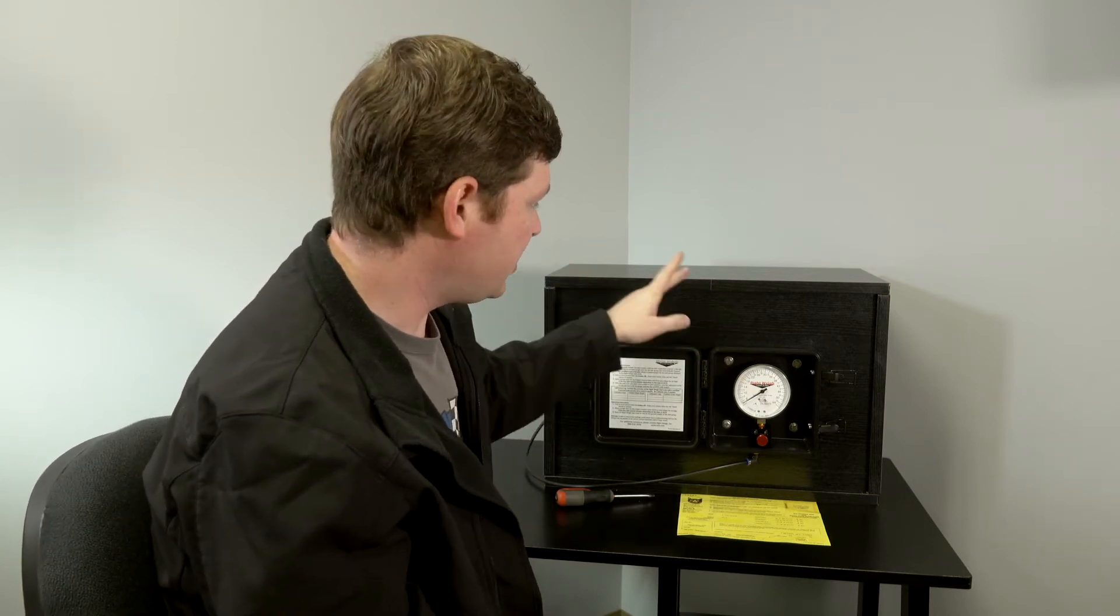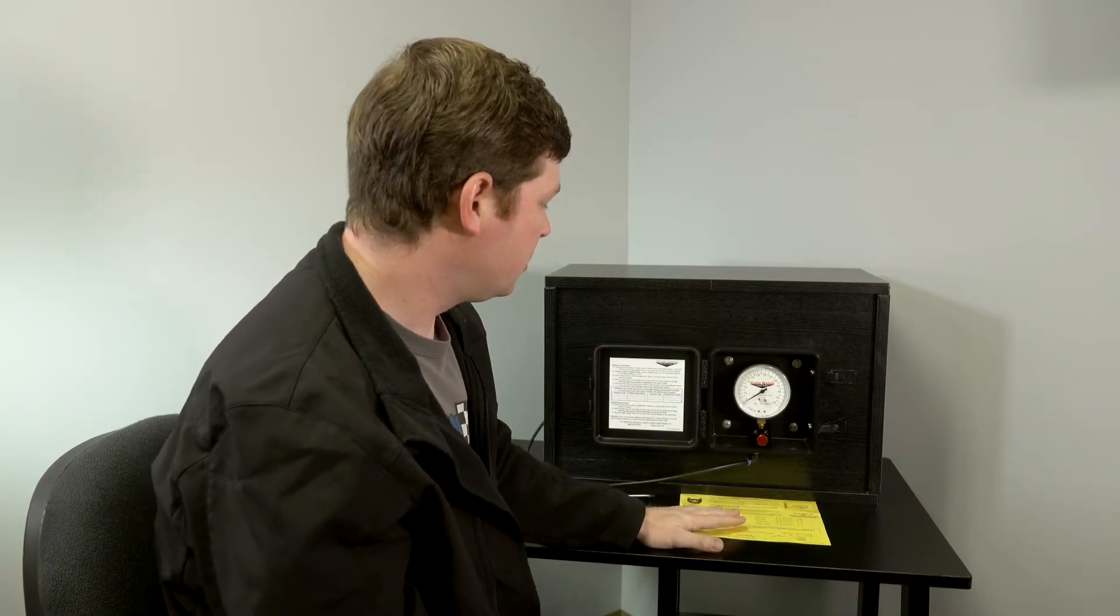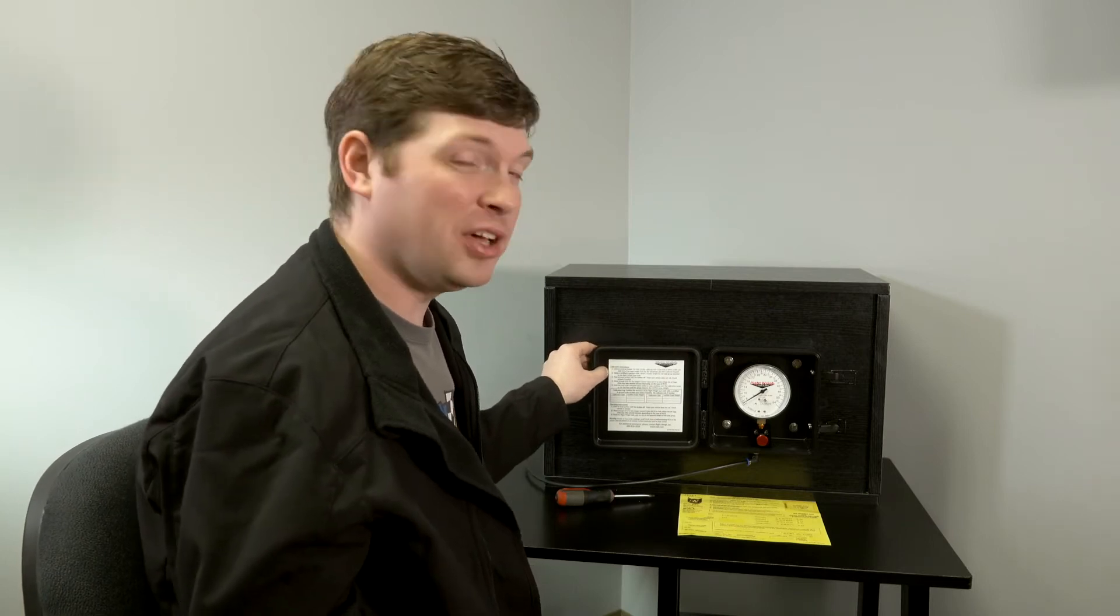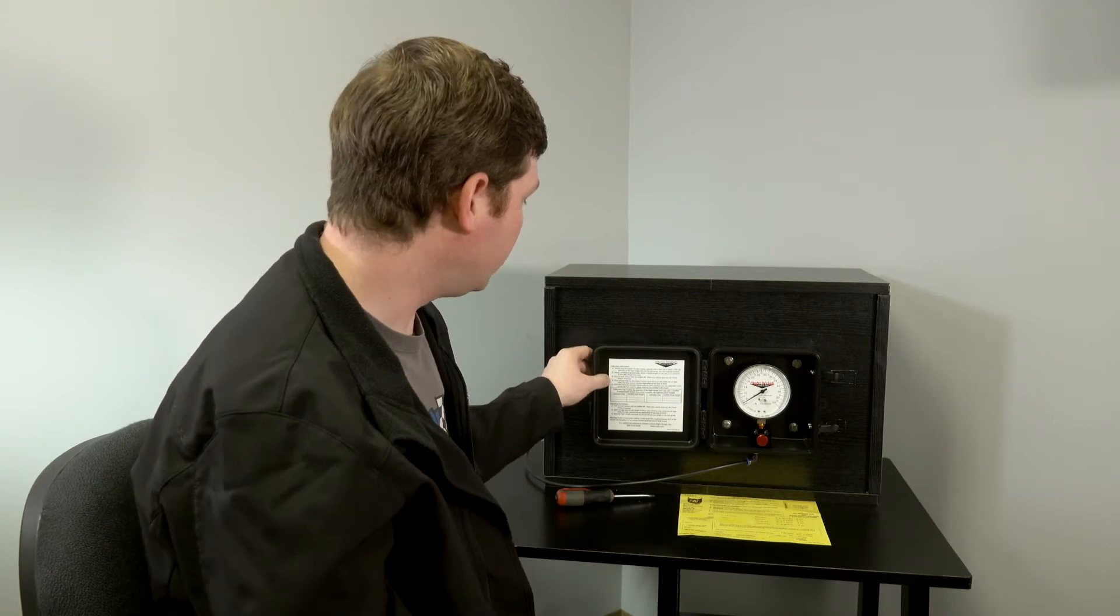We'll just say that this is on our trailer. We just went through the cat scale and got our cat scale ticket. We're on flat level ground. You can stay on the scale if they'll let you, otherwise pull off and find a nice flat level ground to calibrate on.